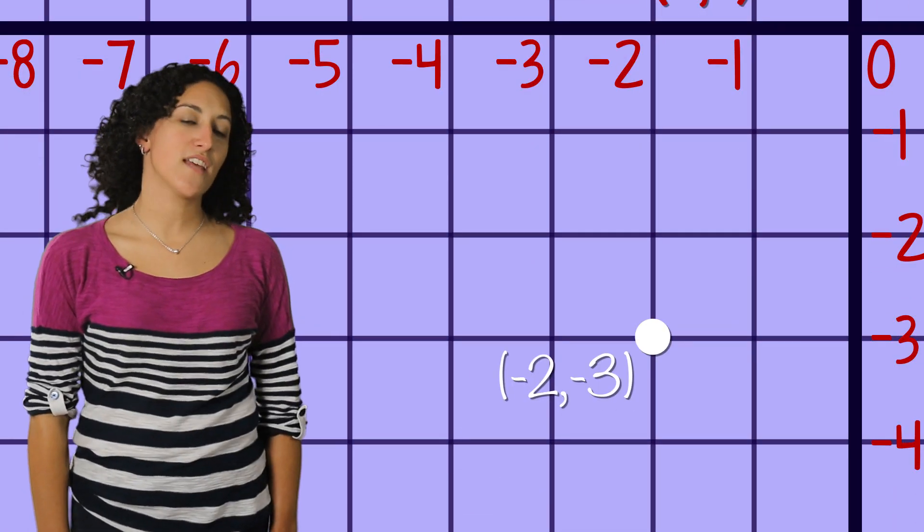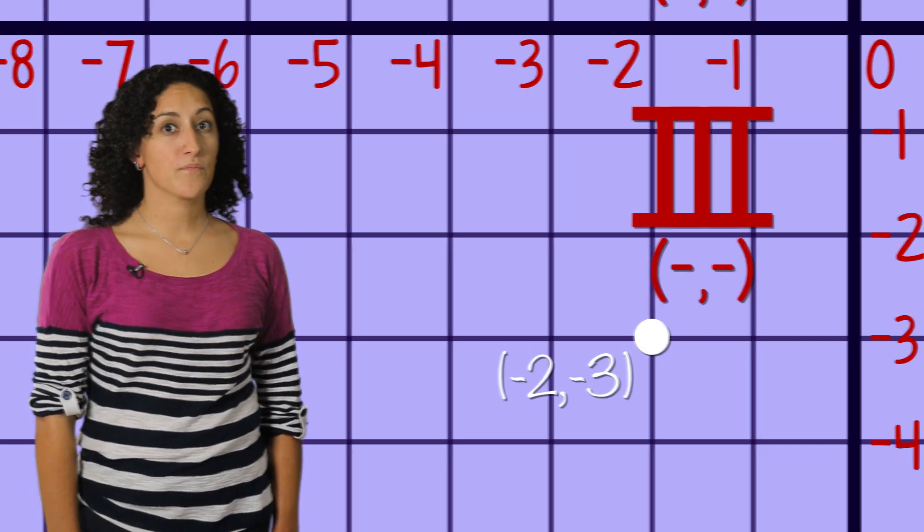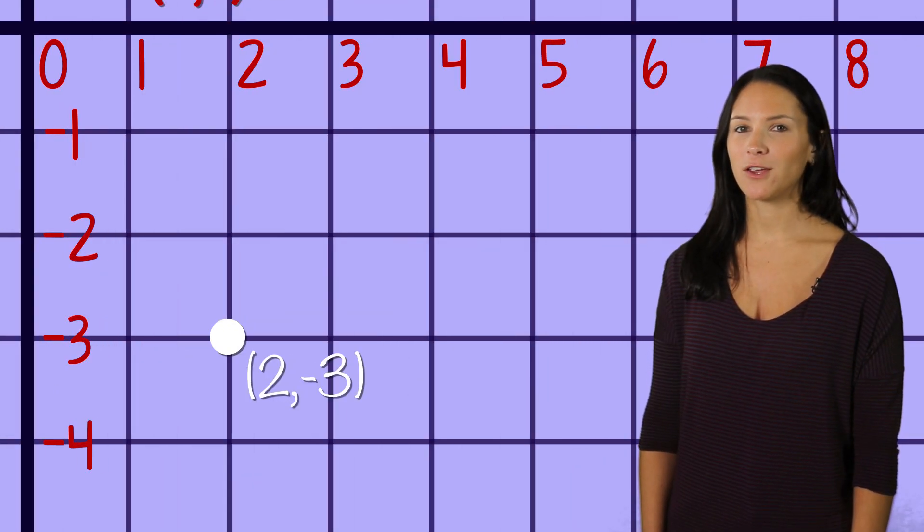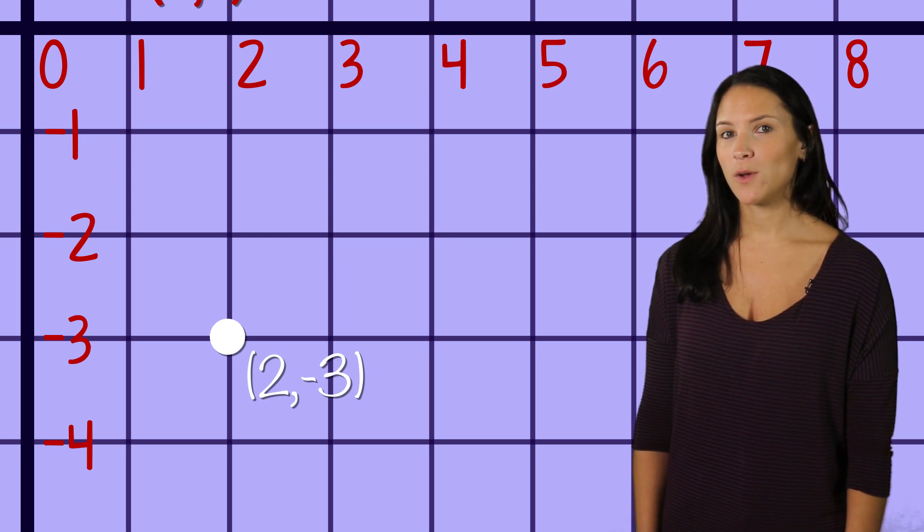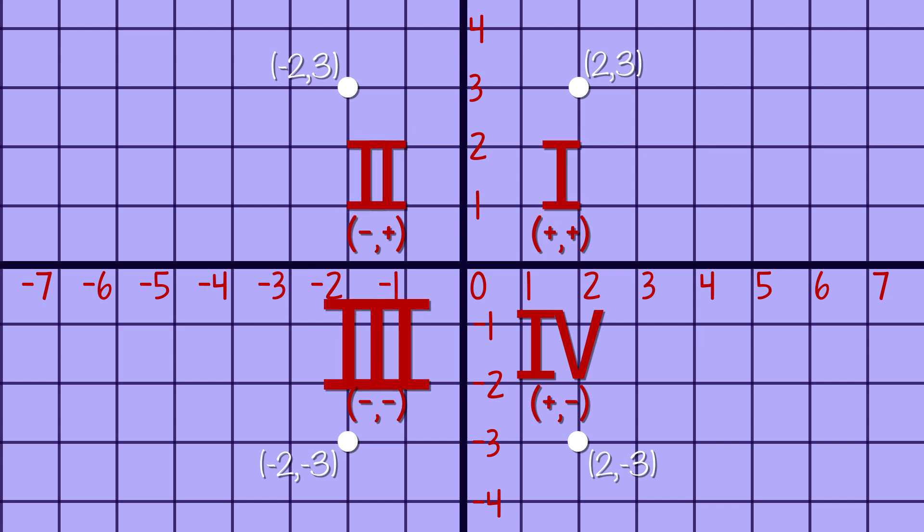And a negative y-value brings us down here, (-2, -3). This is the third quadrant. If we move back to a positive x-value and keep the negative y-value, we end up at (2, -3), over here in the fourth quadrant. Quadrants 1, 2, 3, and 4 are numbered in a counter-clockwise order.